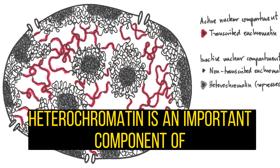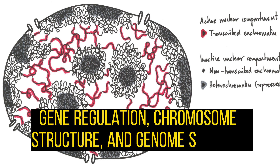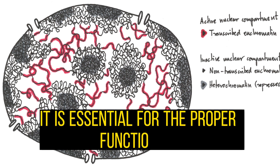In conclusion, heterochromatin is an important component of the eukaryotic genome that plays important roles in gene regulation, chromosome structure, and genome stability. It is essential for the proper functioning of cells and the maintenance of health.